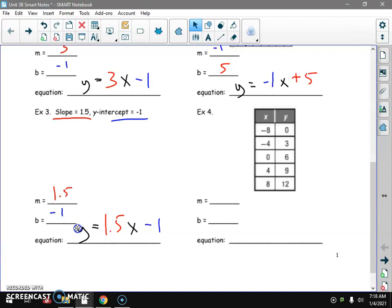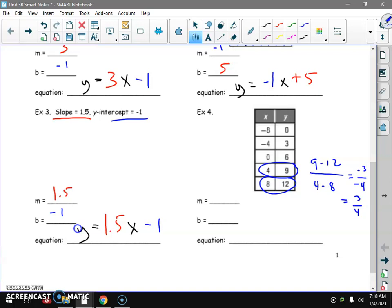How do we take this whole table to find out? Oh yeah, I remember, we just picked two. I'm going to pick this one and this one. And Y minus Y, 9 minus 12 over 4 minus 8. That's going to find the M. The M is negative 3 over negative 4, which is 3 fourths.